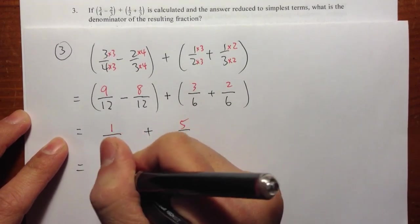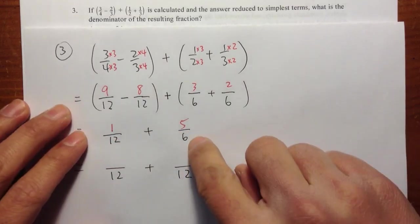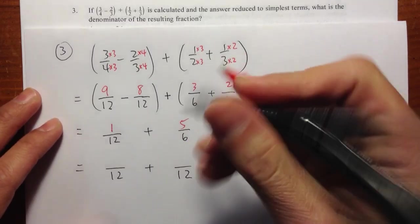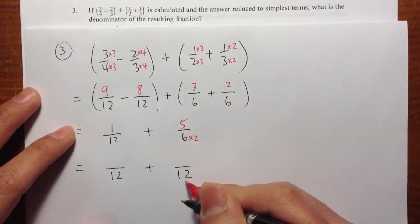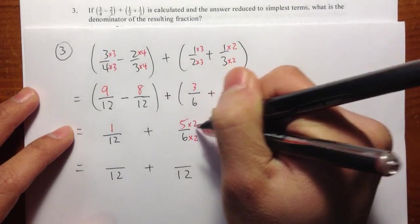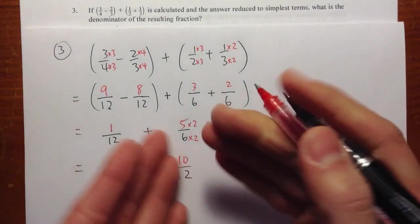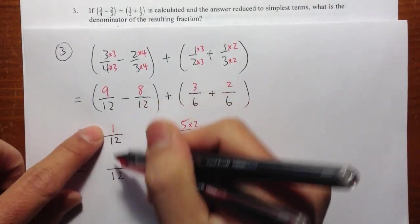And it's possible to make both fractions something over 12, because if we multiply by 2 to the 6, 2 times 6 is 12. And then you multiply by 2 on the top. 5 times 2 is 10. We just need to make change of the second fraction because the first fraction, it's already 1 over 12.